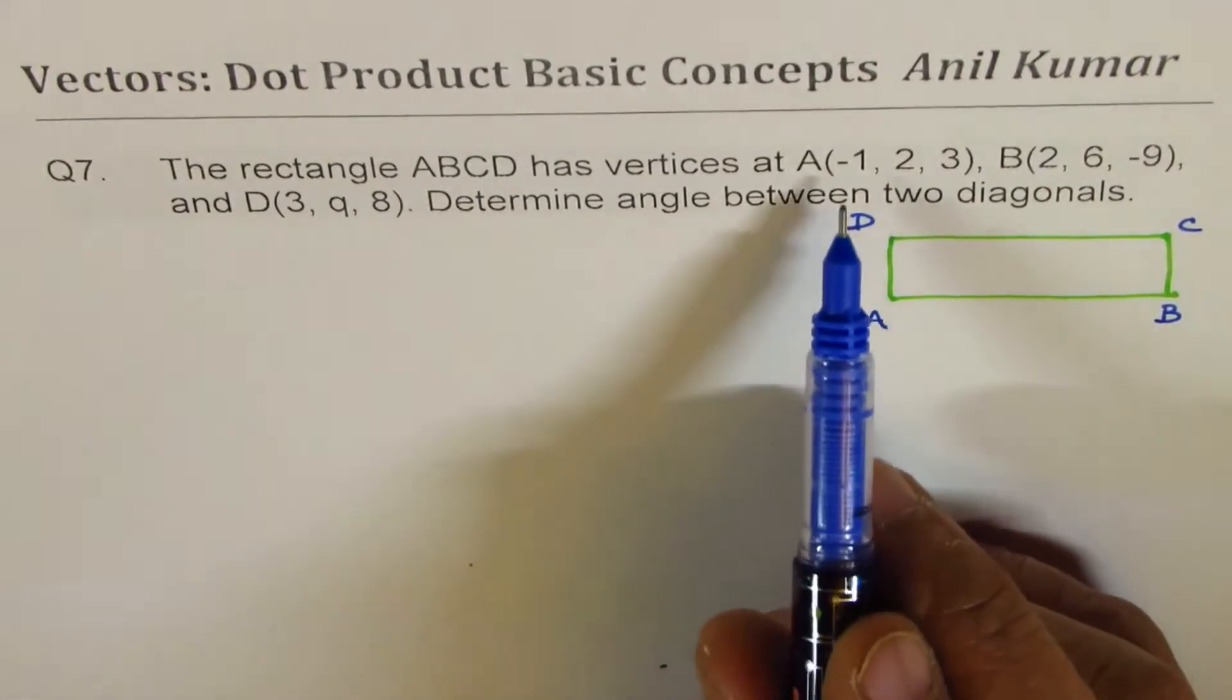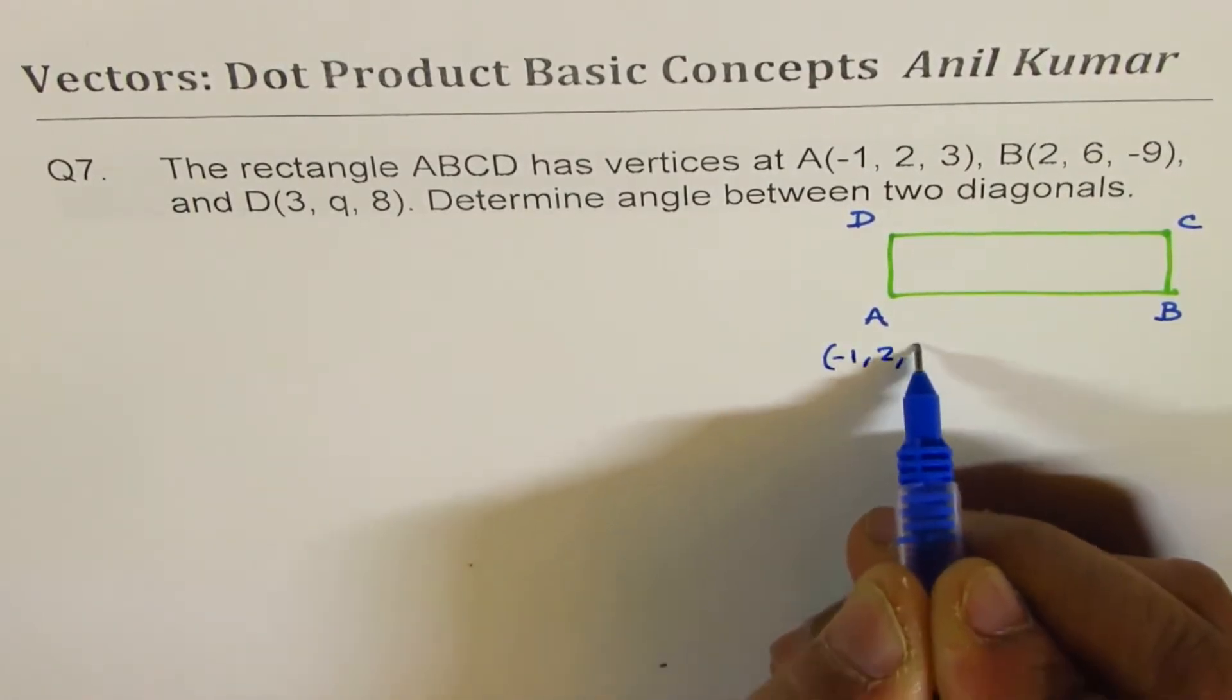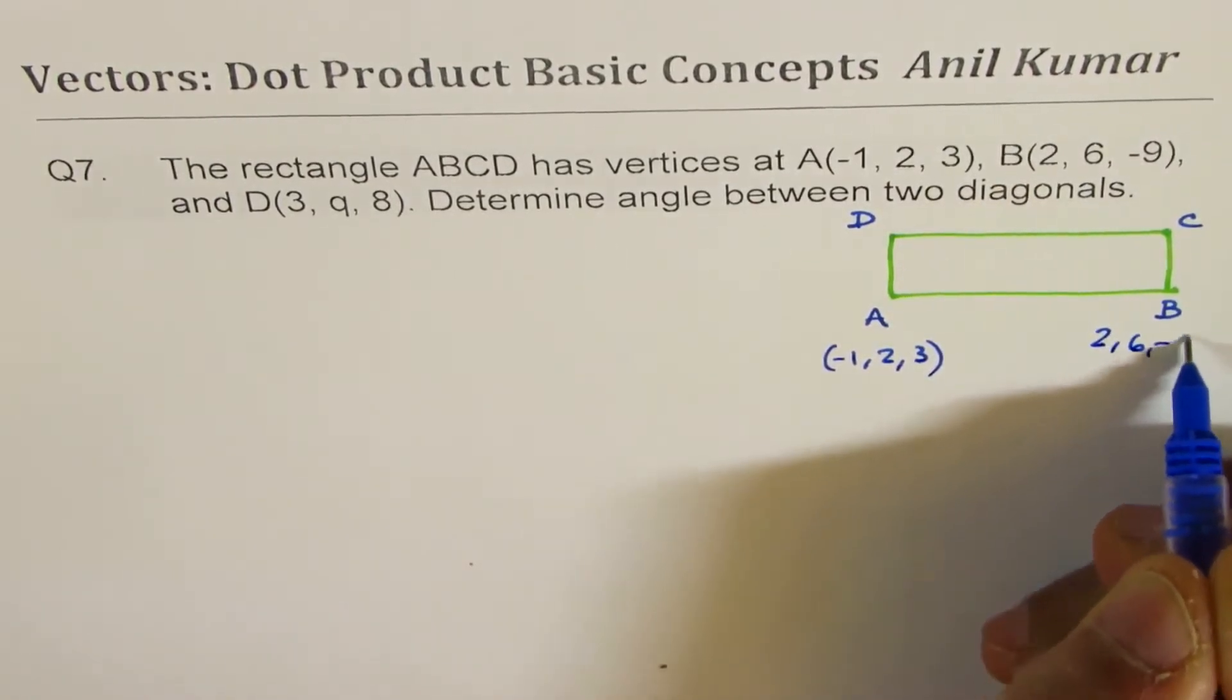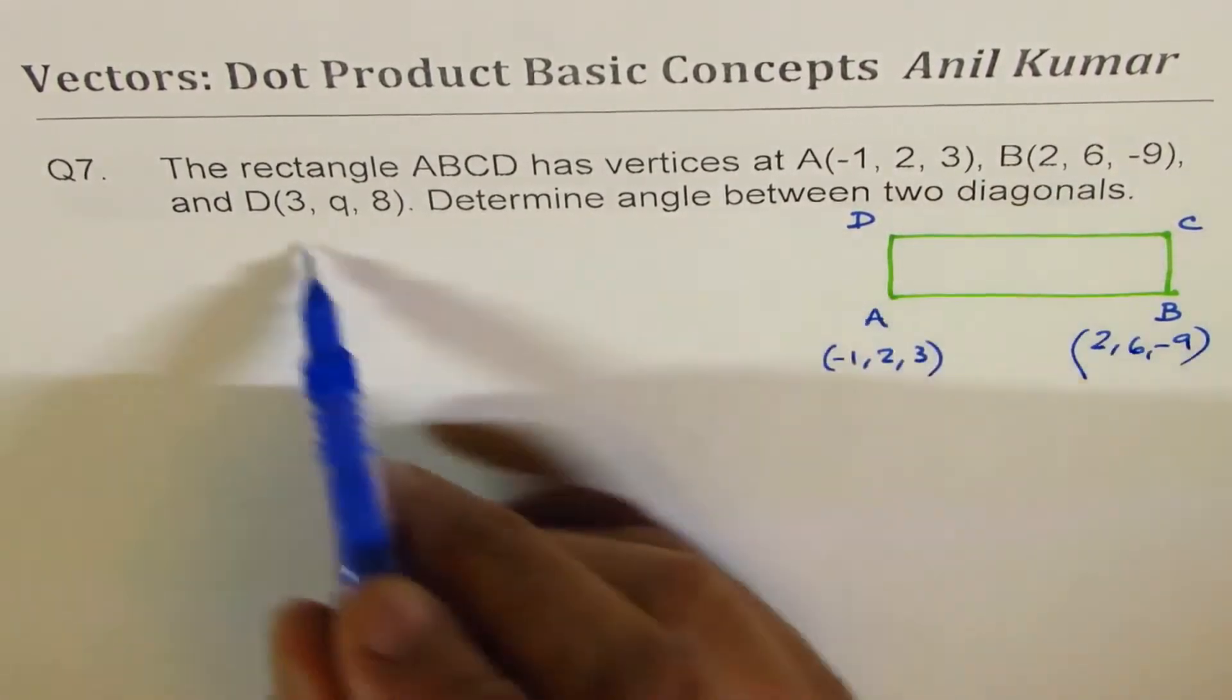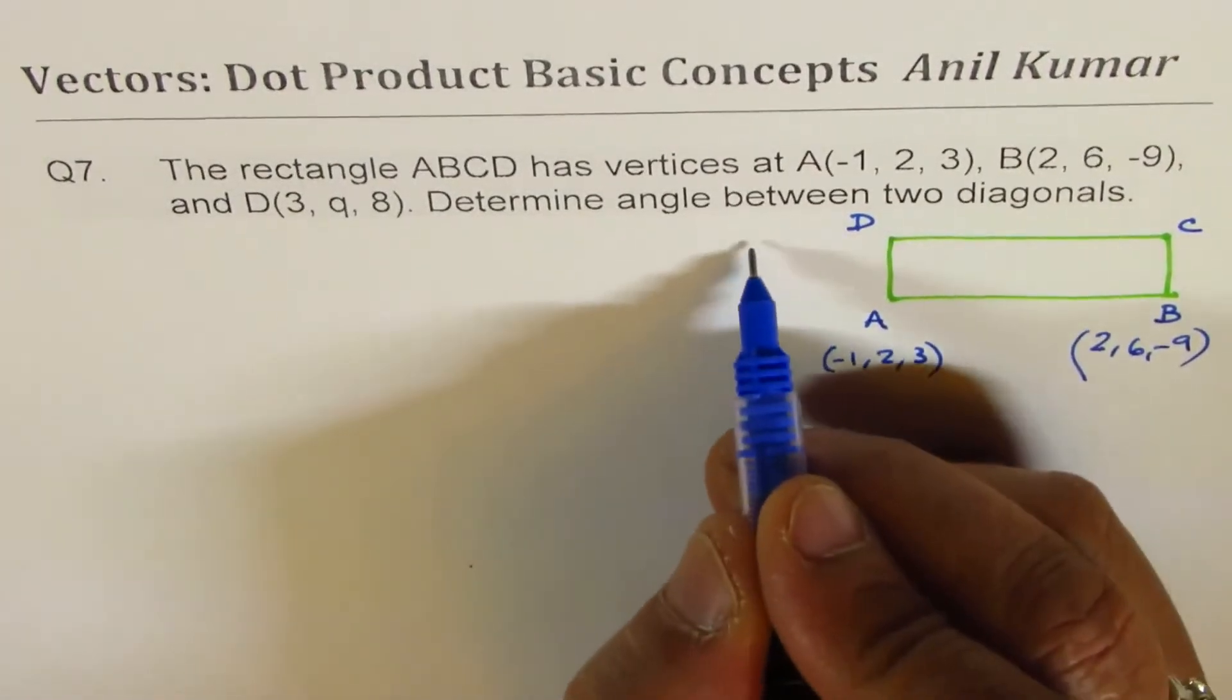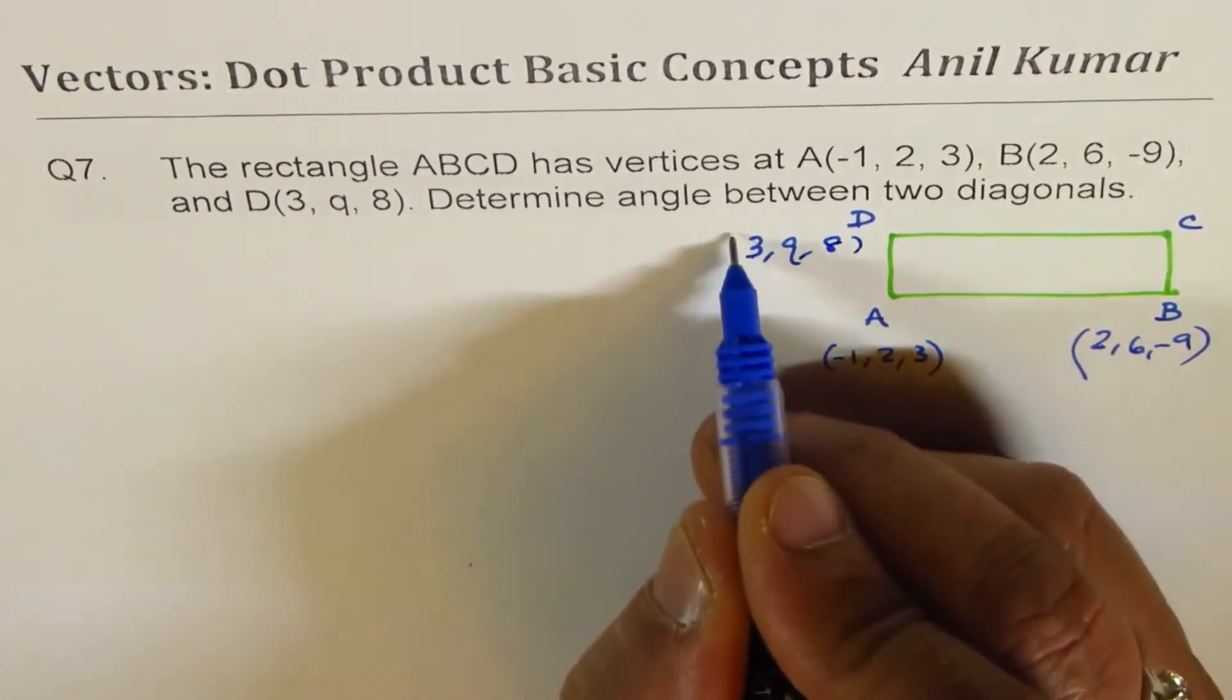Now what we are given is that coordinates for point A are (-1, 2, 3). For B, it is (2, 6, -9). For C, we don't know. And for D, we know it is 3, Q is not known, and 8.